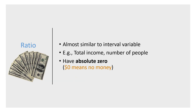The last variable type is the ratio variable, which is almost the same as an interval variable. Examples include total income, number of people, and number of courses. What makes ratio variables different from interval variables is that they have an absolute zero. For example, zero dollars means no money, and zero people means no people.